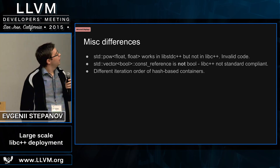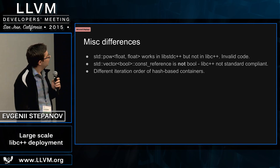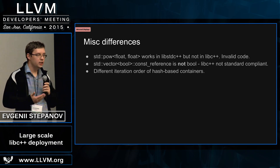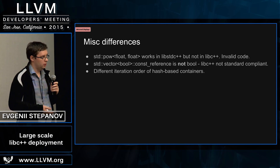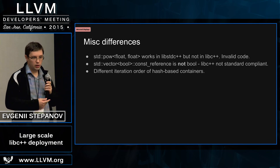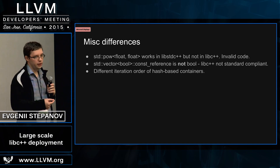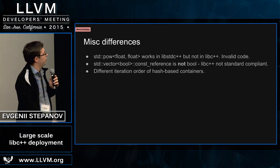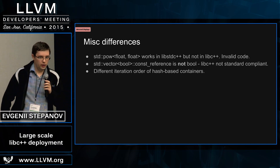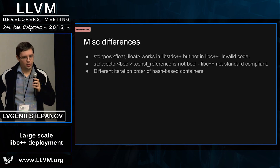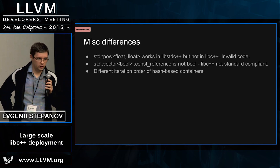And a few smaller things: std::pow is a template in one library and a function in another, so invalid code can notice this — it's a problem in user code, so it should just be fixed there. The const_reference of vector<bool> — libc++ is to blame here, because by the standard it must be bool, and this is noticeable in standard-compliant code. And the last one is quite obvious: hash functions are different, and we've had to fix lots of tests that somehow assumed some iteration order. It's mostly a test problem.